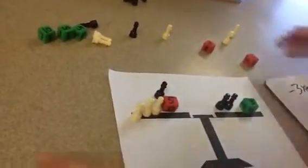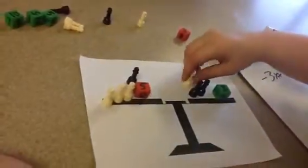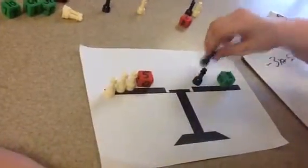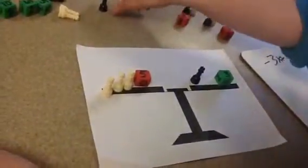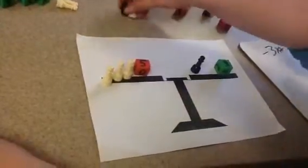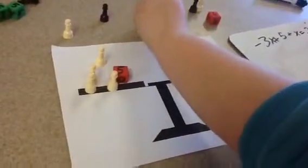For this one, what we would do is we could do this, and you can take away pairs of zero. Okay, so we can't do that. Then you would do this and take that away, so take that pair of zero away.